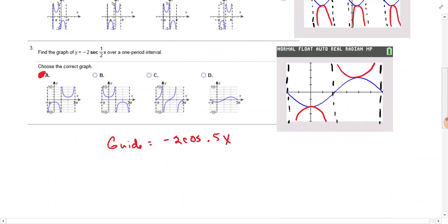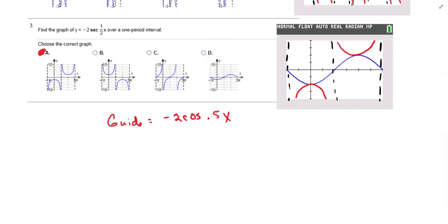So let's go to number three. y equals negative 2 secant one-half x over a one-period interval. Your guide function is negative 2 cosine 0.5 x. And I did that. And the period would be 0 to 2 pi. I think this is what it looks like. And here, the red things are here. And that's the only one that it can be. So we chose A. Use your calculator to help you.